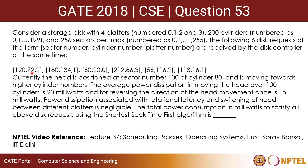The six disk requests are: (120, 72, 2), (180, 134, 1), (60, 20, 0), (2, 1, 2), (86, 3, 2), and (56, 11, 6) — wait, corrected as (118, 16, 1). These are the 6 disk requests provided.